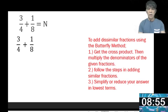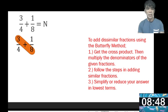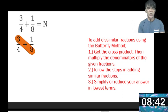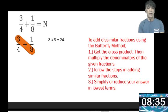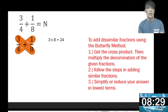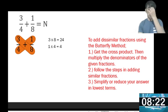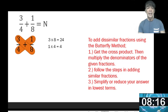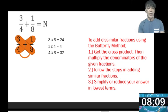To add using the butterfly method, first get the cross product. We get the cross product by multiplying the numerator of the first fraction, which is 3, and the denominator of the second fraction, which is 8. So 3 times 8 gives you 24. Then multiply the numerator of the second fraction, which is 1, and the denominator of the first fraction, which is 4. So 1 times 4 equals 4. Finally, multiply the denominators 4 and 8, giving you 4 times 8 equals 32.